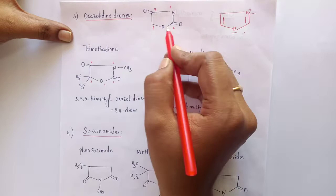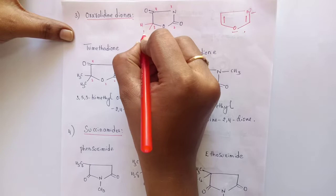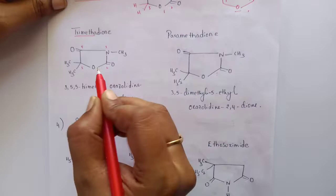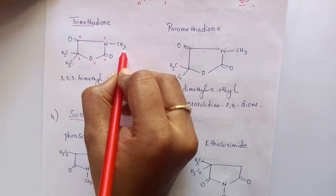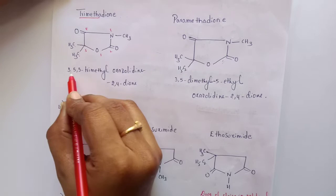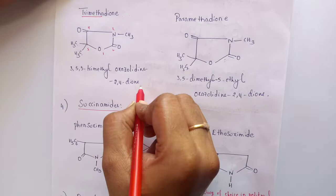Similar to barbiturates and hydantoins, substitution occurs at the 5th position. The first example is trimethadione. The name itself indicates 3 methyl groups — 2 methyls at the 5th position and a 3rd methyl at the nitrogen. The chemical name is 3,5,5-trimethyloxazolidine-2,4-dione. This is the chemical name of trimethadione.